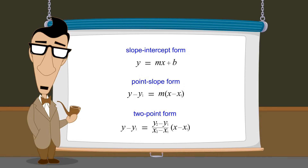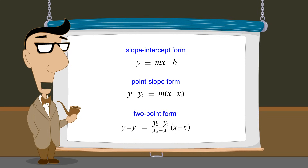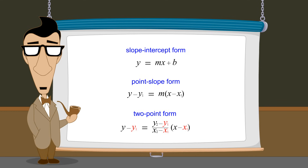The two-point form, unlike the other two forms, does not contain a constant which specifies the line's slope. However, like the point-slope form, it includes the coordinates of one point on the line, constants x1 and y1, plus the coordinates of a second point x2 and y2, which also lies on the line.